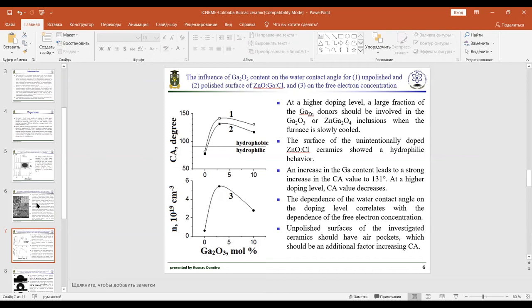Unpolished surface of investigated ceramics should have air pockets which should obtain a factor that increases CA, where roughness and density of the surface voids are minimal.